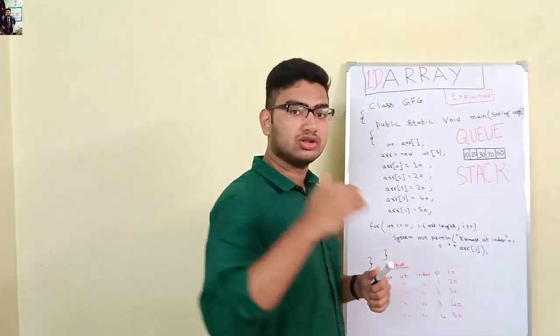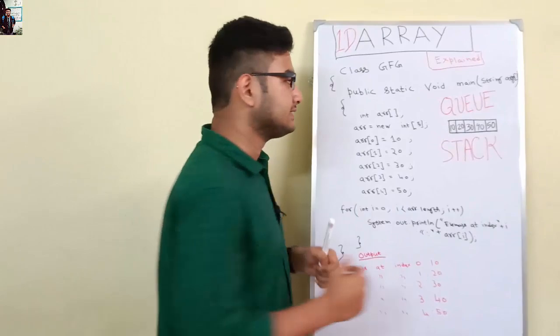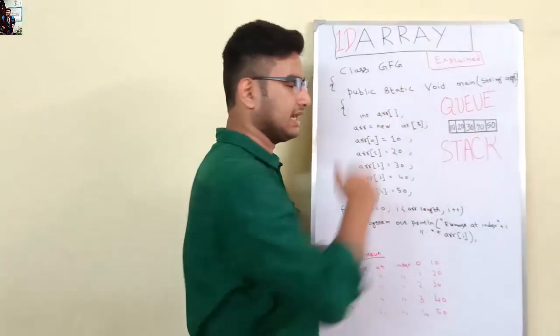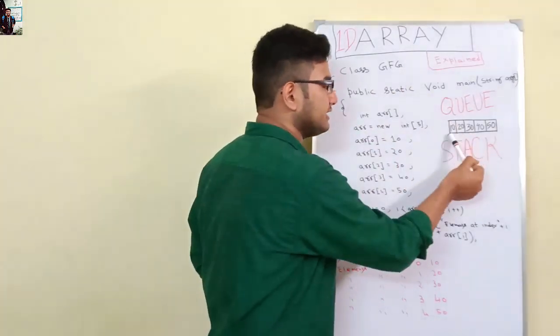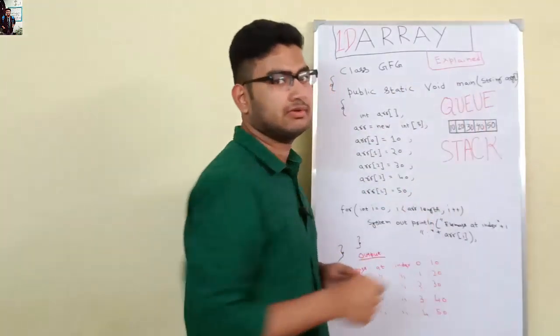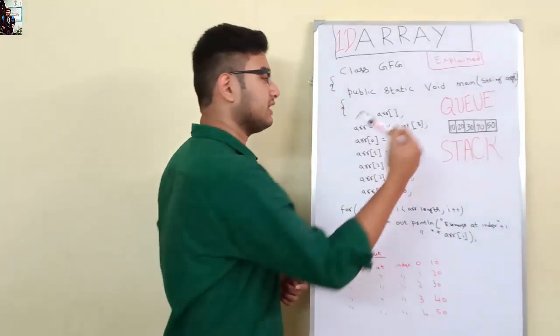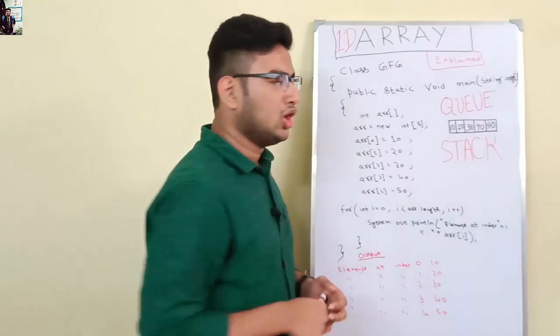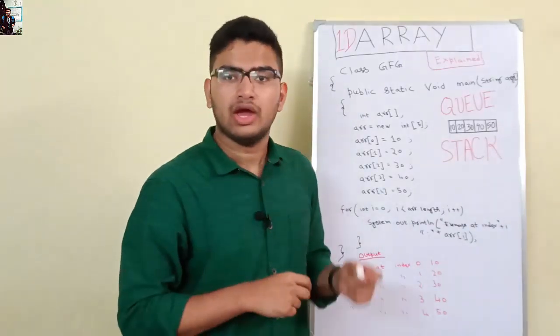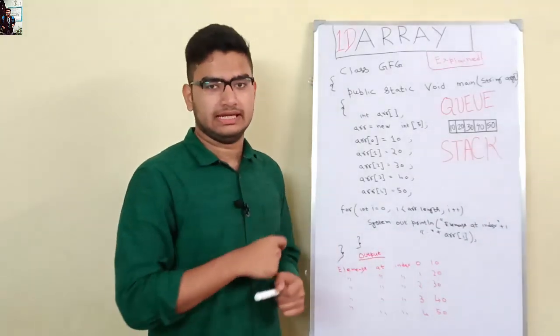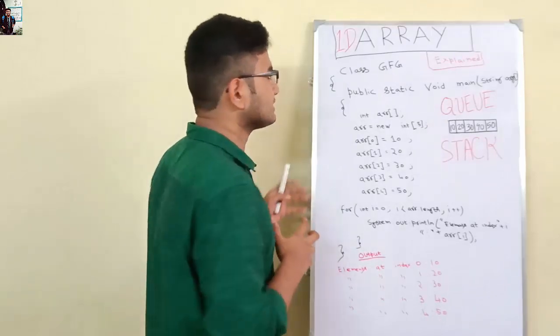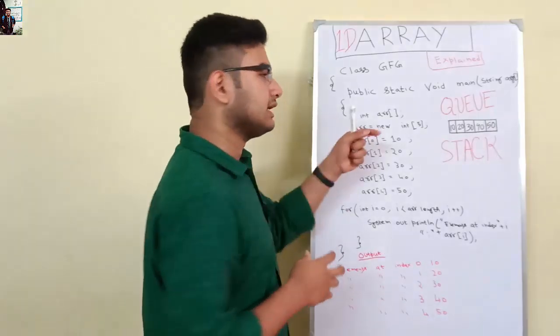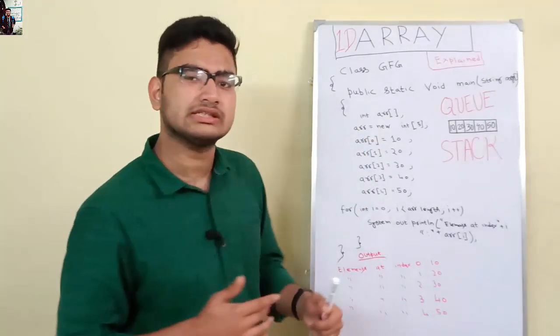The thing that depends on the data type of the array is the components we put inside. If it's int, we give integer values inside the arrays. If it's double, we give double values. If it's string, we give string values. There are two types of array: 1D array and 2D array. Today we'll discuss 1D array. There are two types of 1D array: stacks and queues.